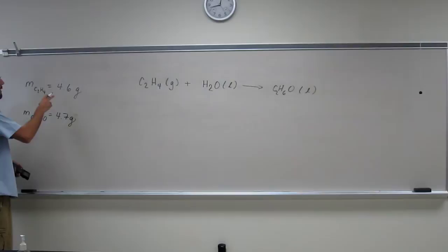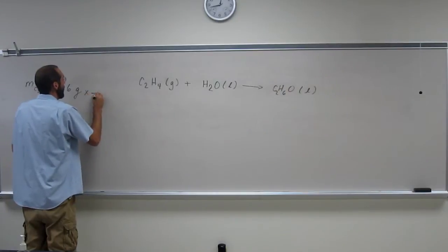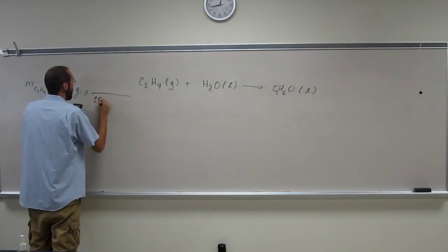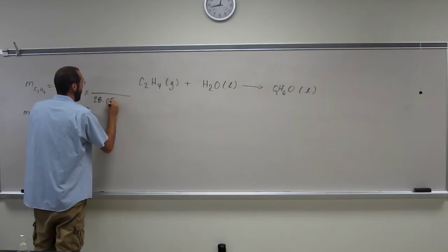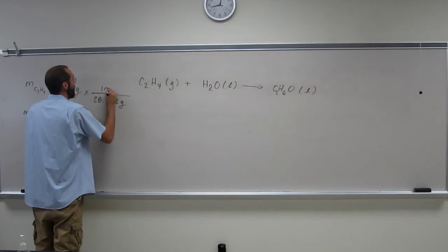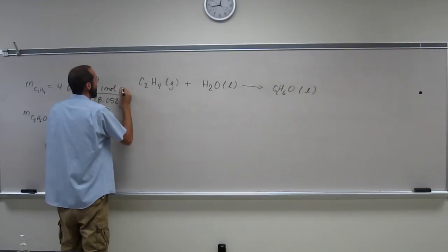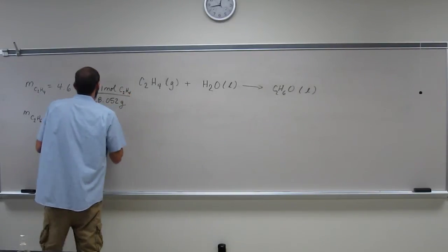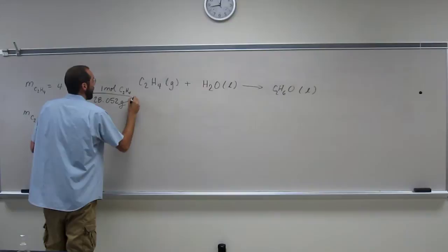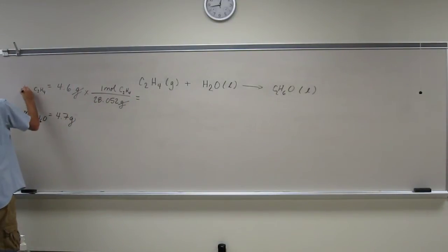Let's go ahead and figure this out. We've got to figure out the molar mass of both of these things. So ethylene is going to be 2 times 12.01 plus 4.01. So molar mass of ethylene, 28.052 grams per one mole. And this is C2H4. So that's going to give us the number of moles of ethylene.